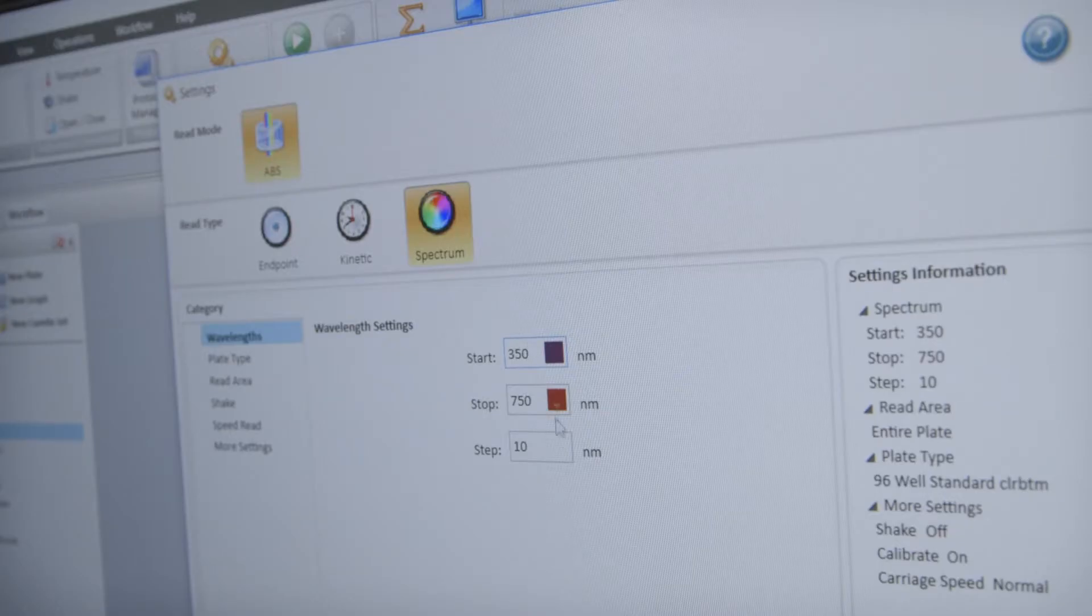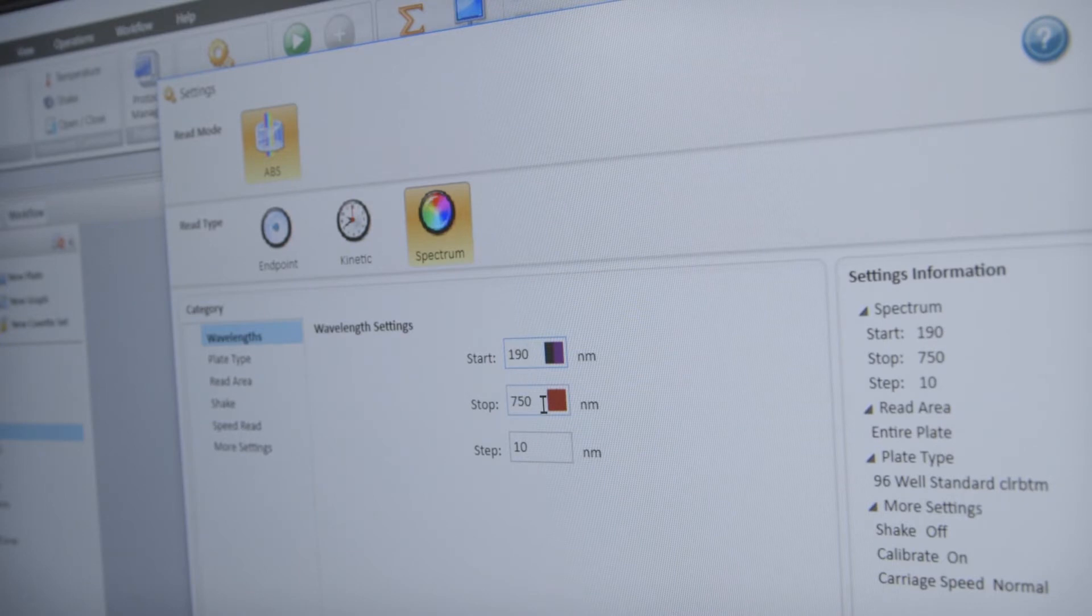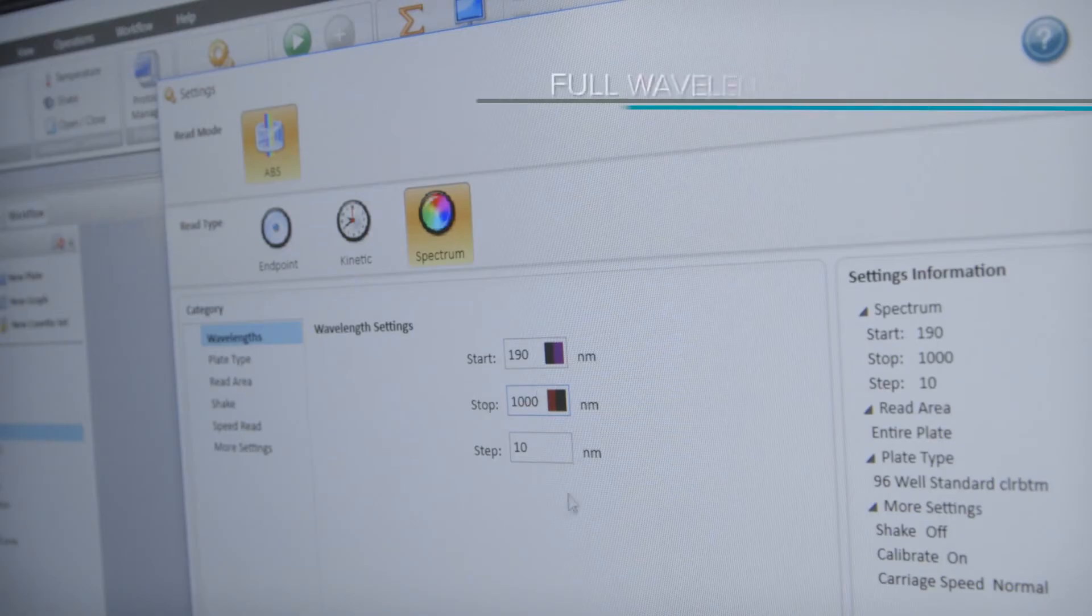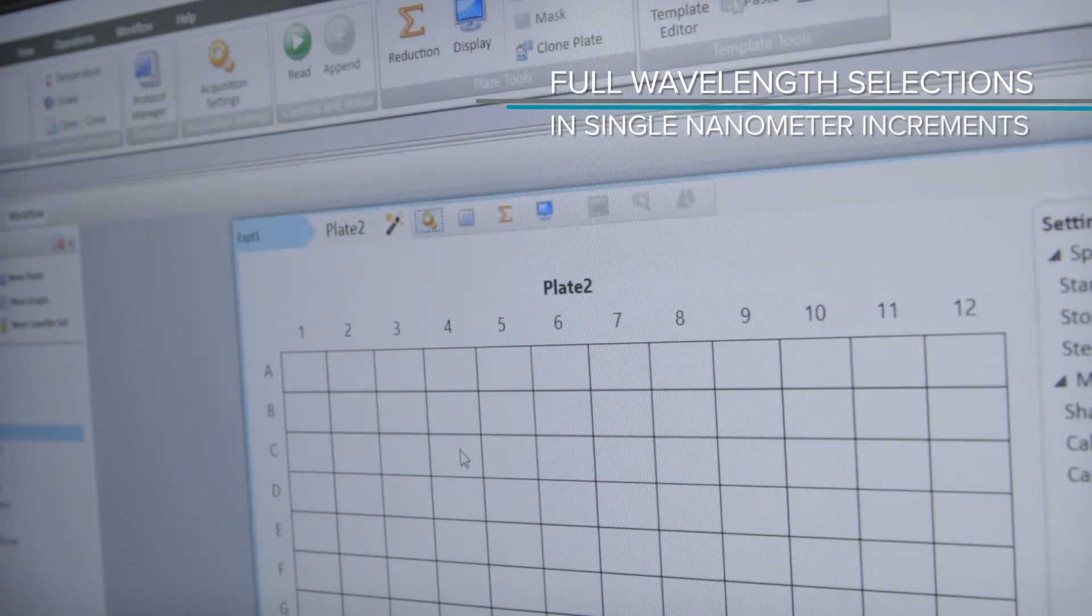The tunable wavelength reader eliminates the need for filters. Get full wavelength selection from UV to visible range in single nanometer increments.